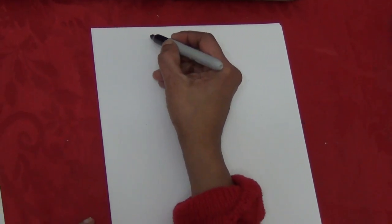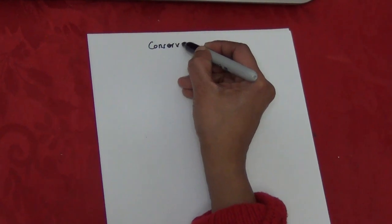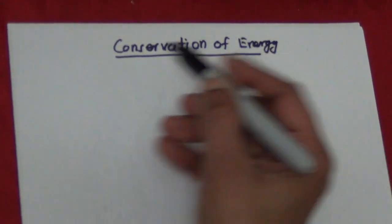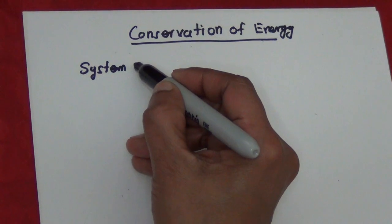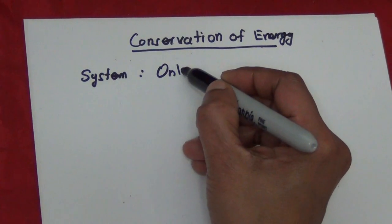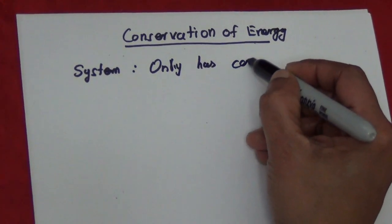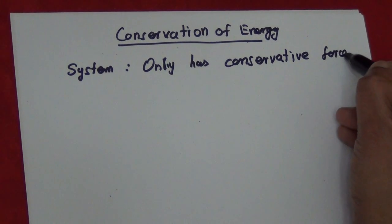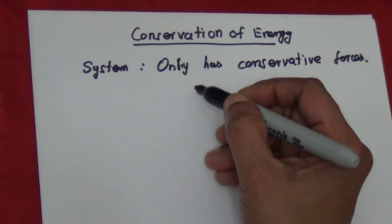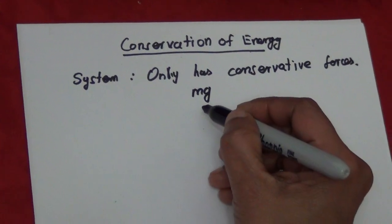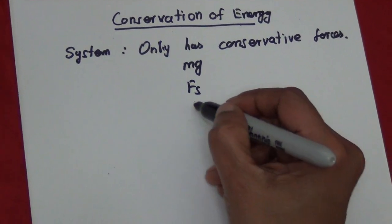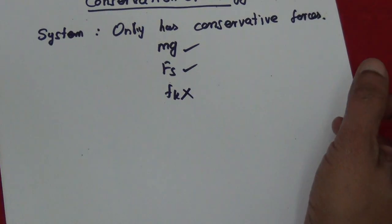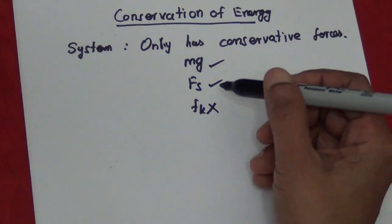Now let's start conservation of energy. We are going to consider a system or systems which only has conservative forces. In a system, if you draw the forces, it has only gravity or the spring force — these are conservative forces. But friction is not a conservative force.